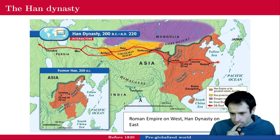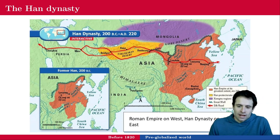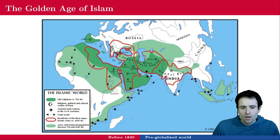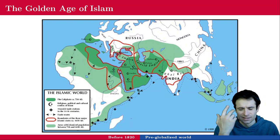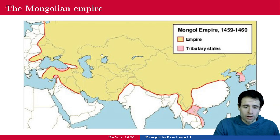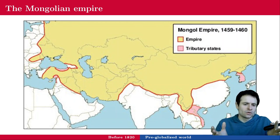The Han Dynasty in China was the empire going on in the east while the Roman Empire was in the west. Then we got the Golden Age of Islam that went all the way to Spain, but was pushed back in France by Charles Martel. The Mongolian Empire was gigantic — covering a very large territory including much desert — and is believed to have been the largest empire ever in terms of territory.